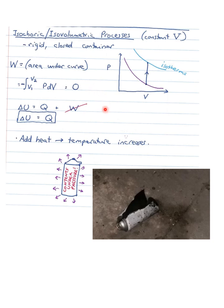Mathematically the integral also comes out to zero. If work equals zero, the first law becomes ΔU = Q + W, but W = 0, so ΔU = Q — which means if you add heat, the temperature will go up. So for the can of bug spray, if heat is added or temperature goes up, pressure will go up and can exceed what the canister can hold — causing it to explode and make a huge mess, and it can be very dangerous as well.